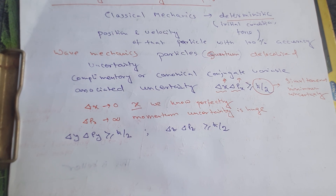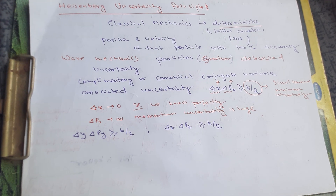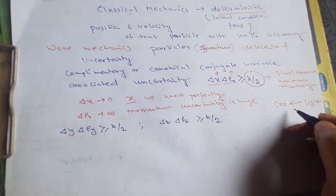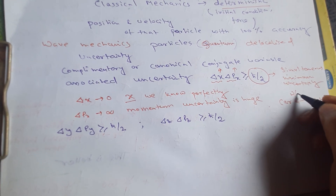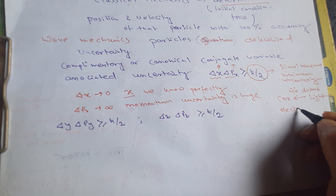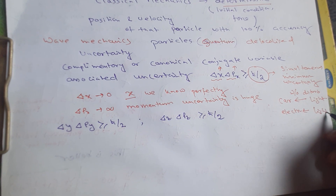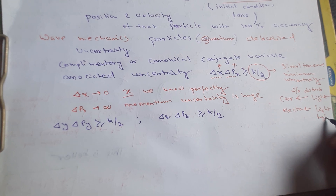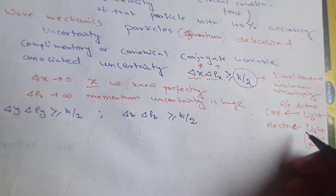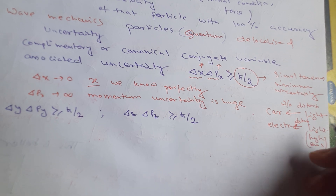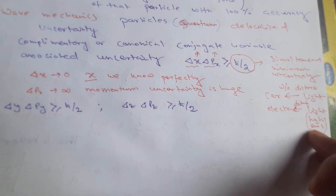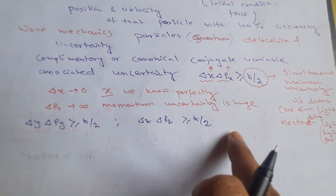In classical mechanics, if a car is moving, we can shine light on it and measure its position and momentum without disturbing it. But for a quantum particle like an electron, the light we use to observe it is of very high energy — because the frequency is very high and the wavelength is very small. So when it falls on the electron, it disturbs the state of the electron. That is why we cannot know which state it was in, because when we disturb it, it is in a new state. That is why this uncertainty is associated with quantum particles.